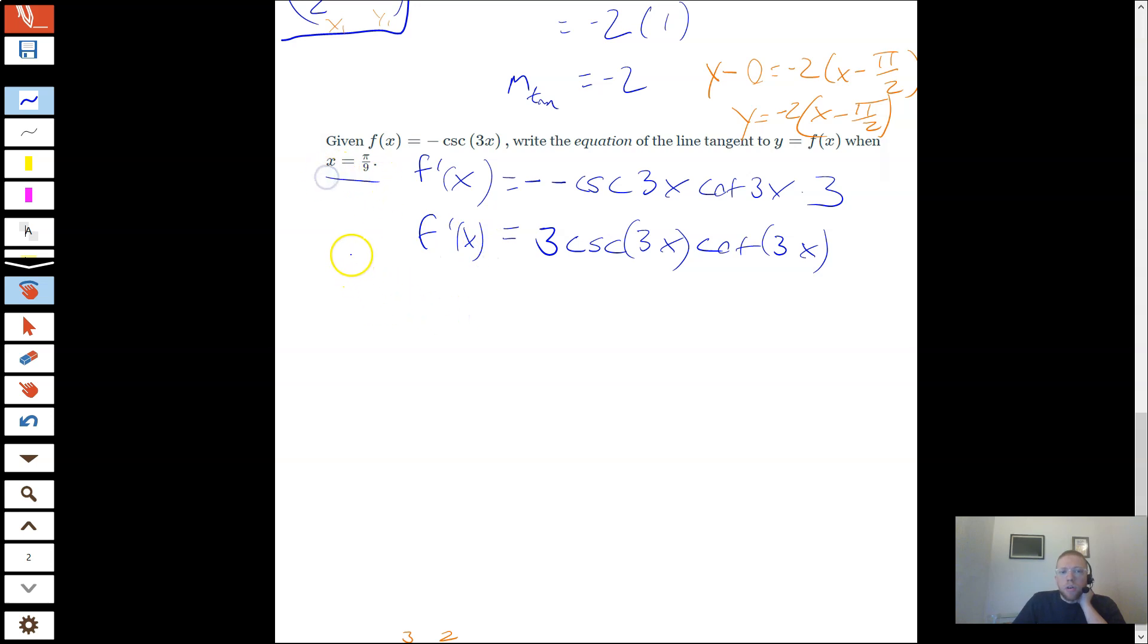And then I want to plug in my x. So I want to take f'(π/9). So 3 times cosecant, 3 times π/9 would be π/3. So I'm going to do that little bit of simplifying right now. And then cotangent 3 times π/9, again, is π/3.